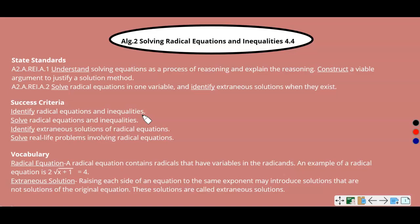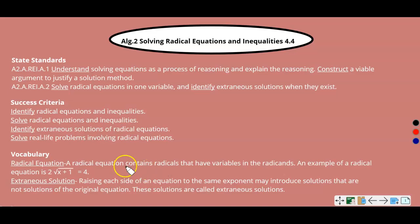A couple of vocabulary terms you need to know. A radical equation — we've already been looking at radicals, but now we're going to look at radical equations, so now we're going to be solving with an equal sign. A radical equation contains radicals that have variables in the radicands. An example is 2 times the square root of x plus 1 equals 4.